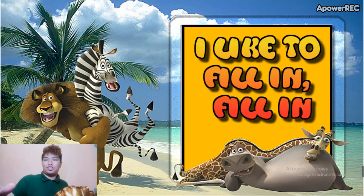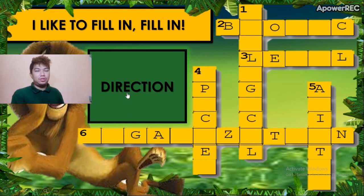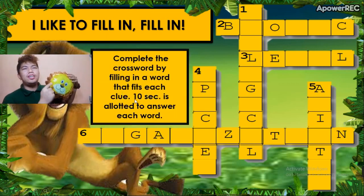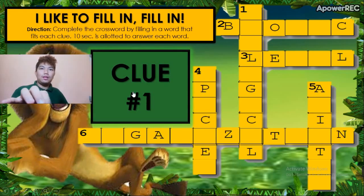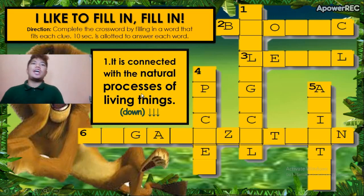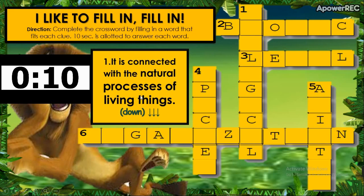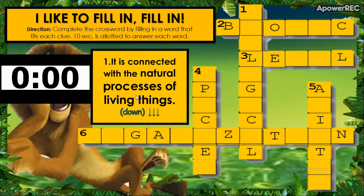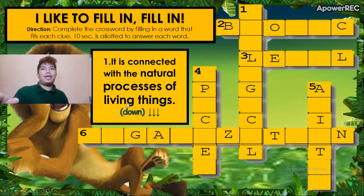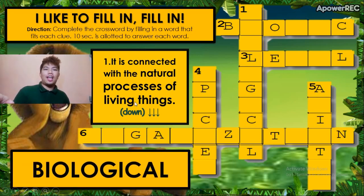So the direction of this game: all we need to do is to complete the crossword by filling in a word that fits its clue. Clue number one: it is connected with the natural process of living things. If you think the answer is 'biological,' you are correct.